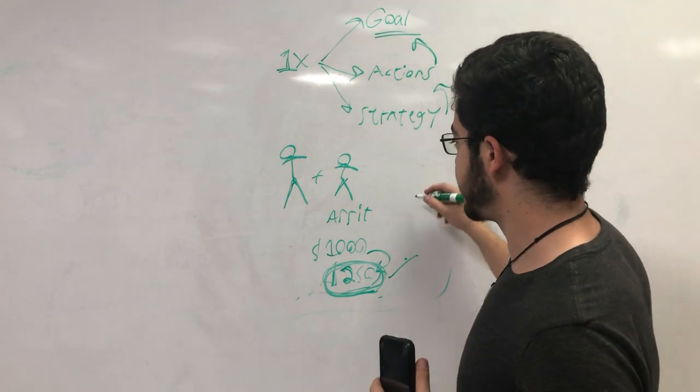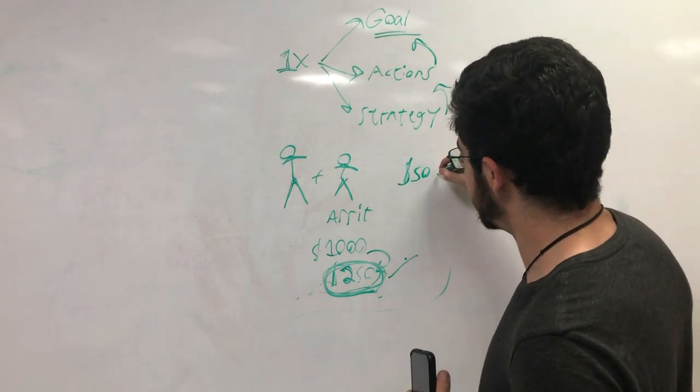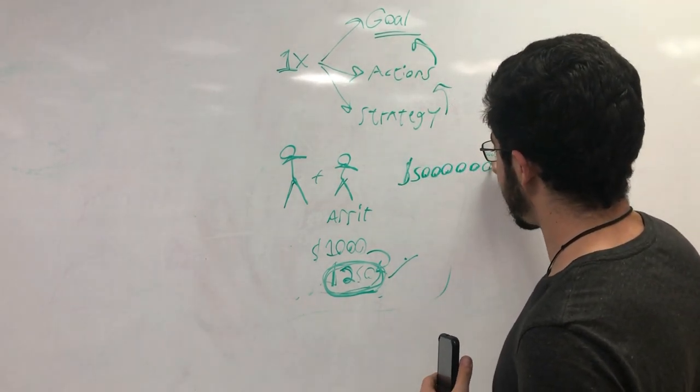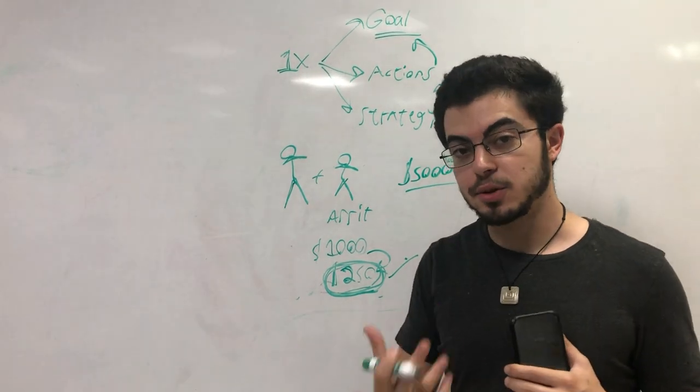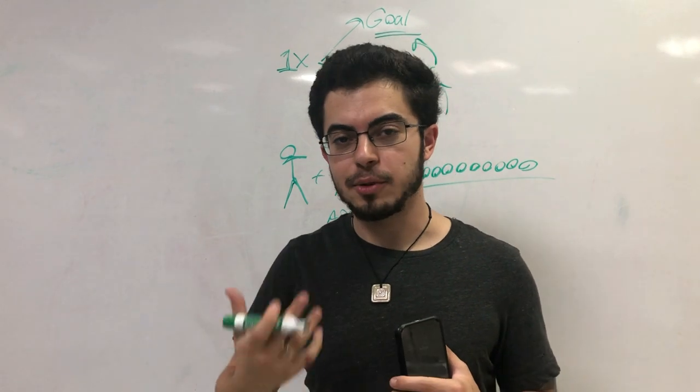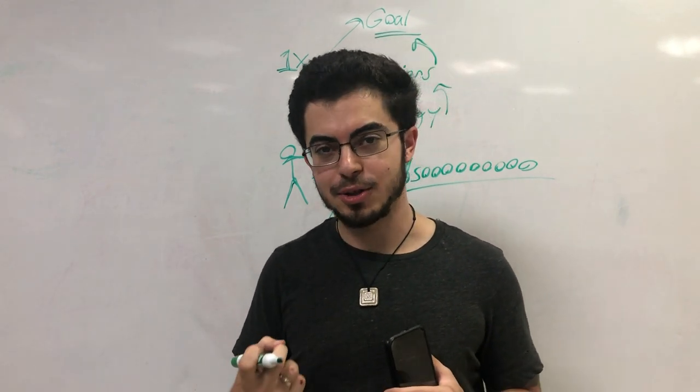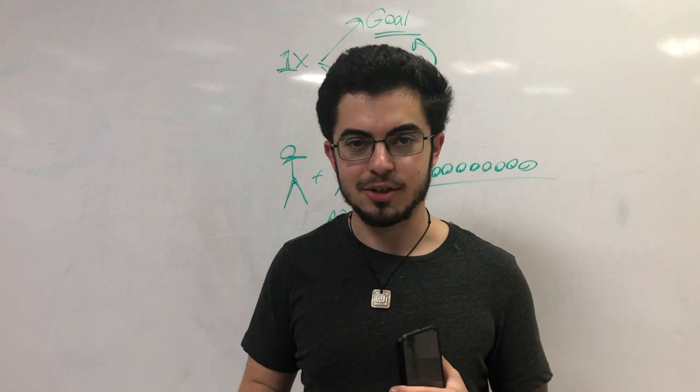So this all comes from having that big, giant, juicy purpose that has many, many zeros. This is how you start to actually think in the right levels. That's how you actually get to a situation where you're moving in the right direction.